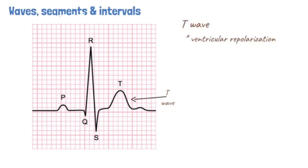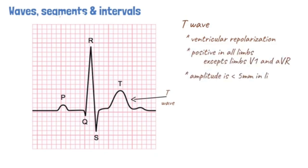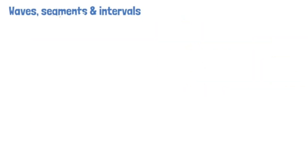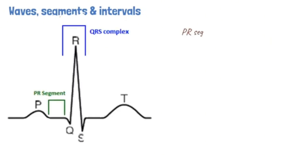A normal T wave is positive in all leads except leads 3, aVL, and AVR. It is less than 5 mm in amplitude in the limb leads and less than 15 mm in amplitude in the chest leads. Segments are usually isoelectric lines present between two waves. The PR segment commences at the end of the P wave and ends at the beginning of the QRS complex.